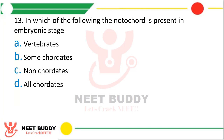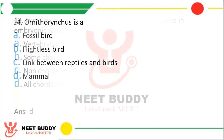Question twenty-three: in which of the following is notochord present in the embryonic stage? Option A, vertebrates; option B, some chordates; option C, non-chordates; or option D, all chordates? The correct answer is option D — all chordates contain notochord at some stage of embryo life.